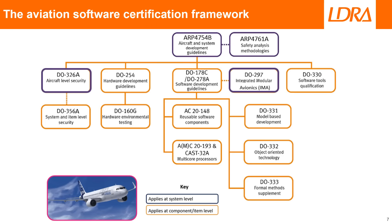DO-178C doesn't exist in isolation. It's influenced by guidance documents and standards that apply not only at component and item level, like DO-178C itself, but also at system level. For example, ARP 4754B introduces the notion of design assurance levels or DALs, which have a very significant impact on the implementation of the DO-178C objectives. There are also several supplementary documents to DO-178C which advise on how its objectives can be met in specific circumstances.